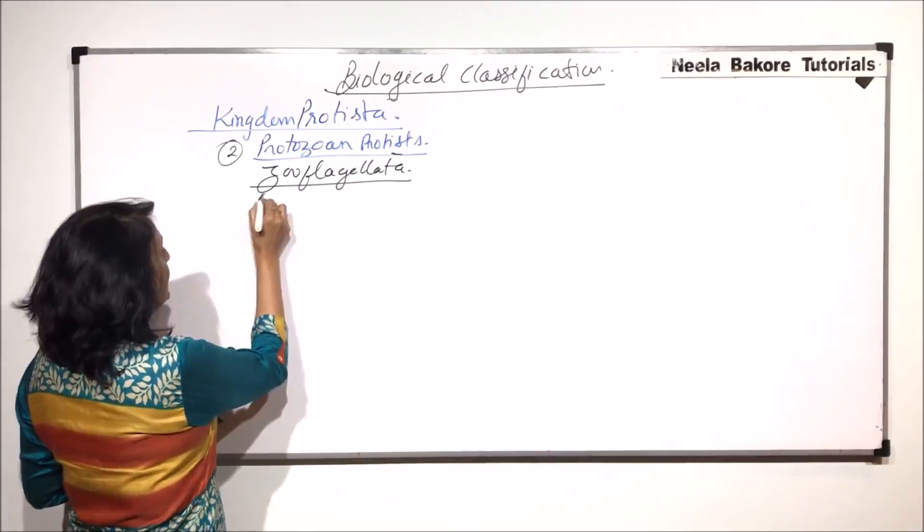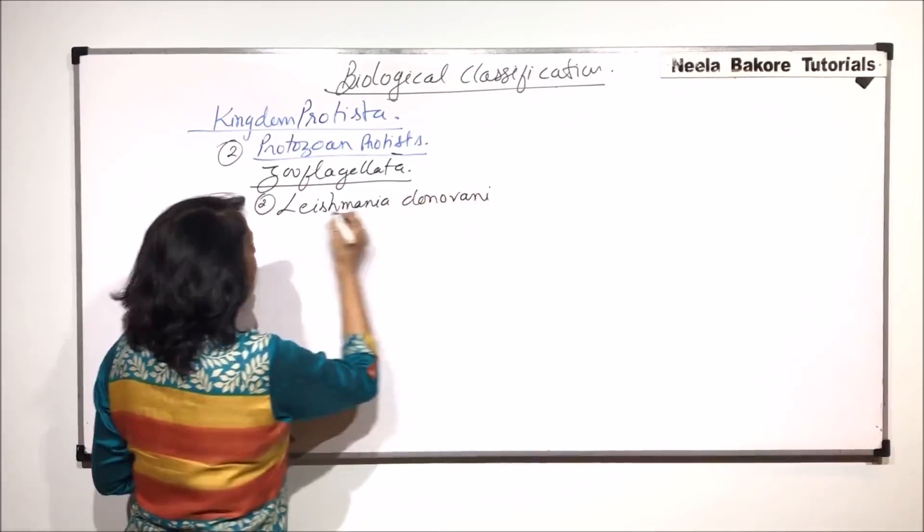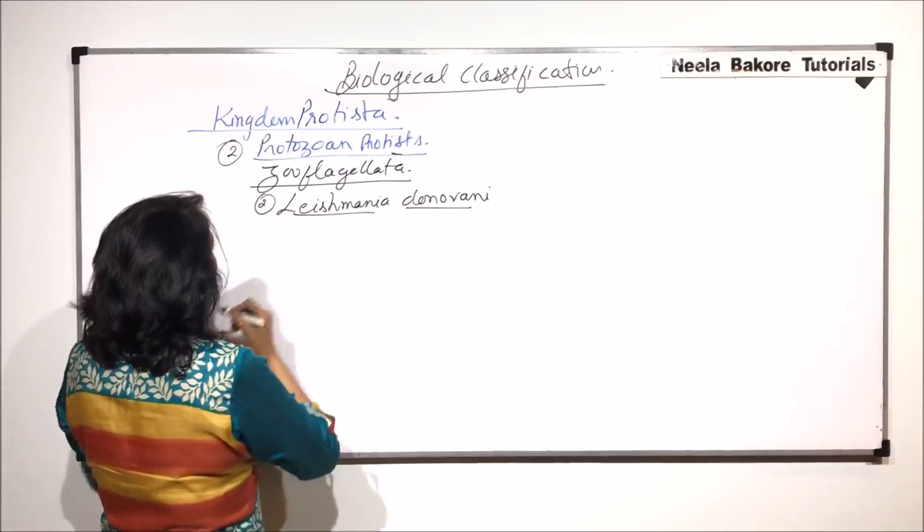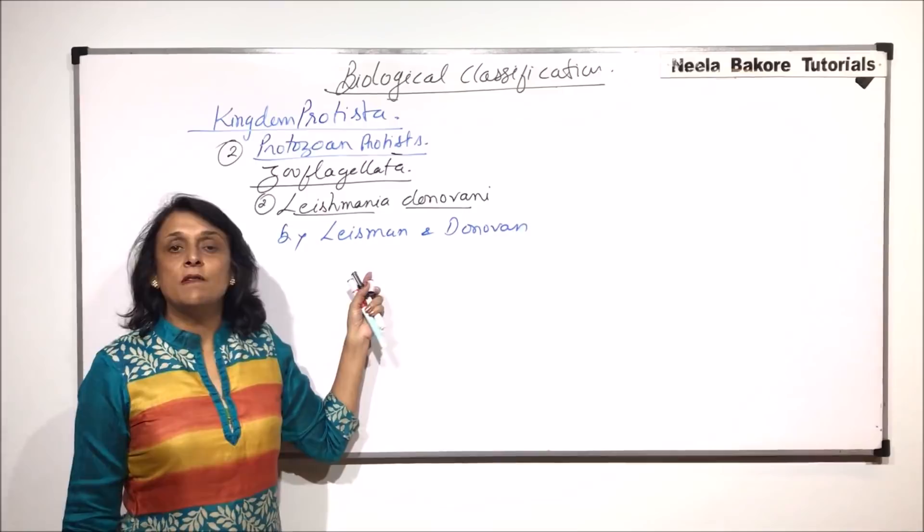We have already discussed one. Let us take one more example. The second example we are talking of is Leishmania donovani. This is the scientific name and it was discovered by two scientists, and that's how the organism was given the name Leishmania donovani.